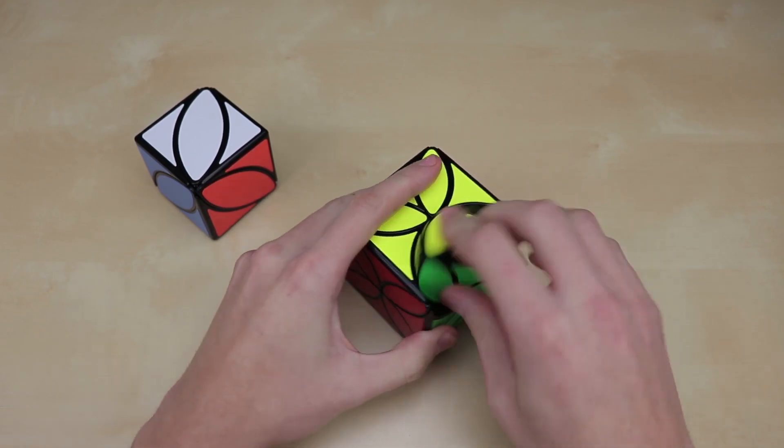Compared to a 3x3, it's something like this. And a 3x3, for reference, is a face-turning puzzle. So these are all three different types of turning puzzles.